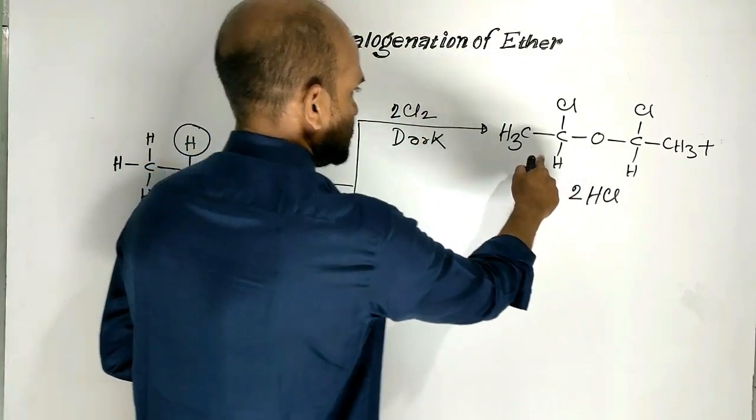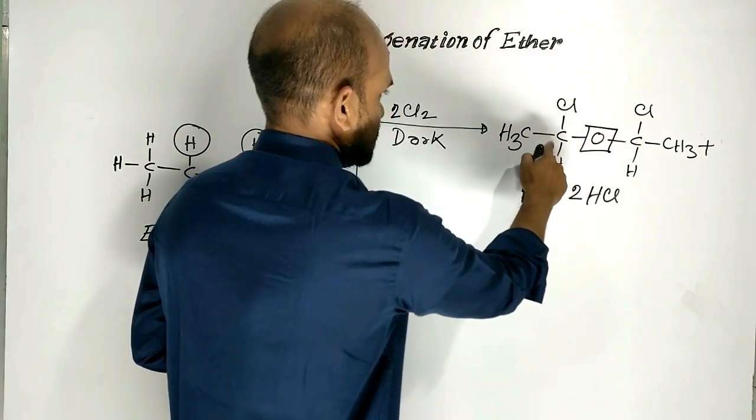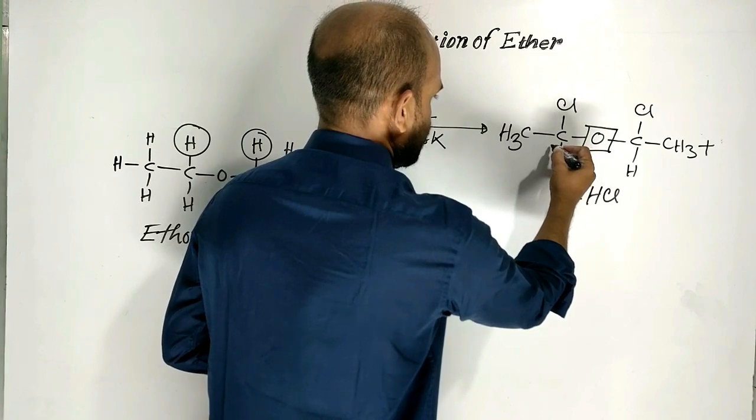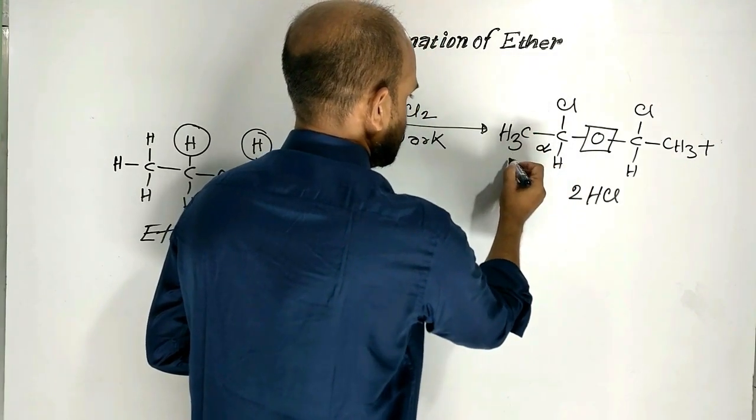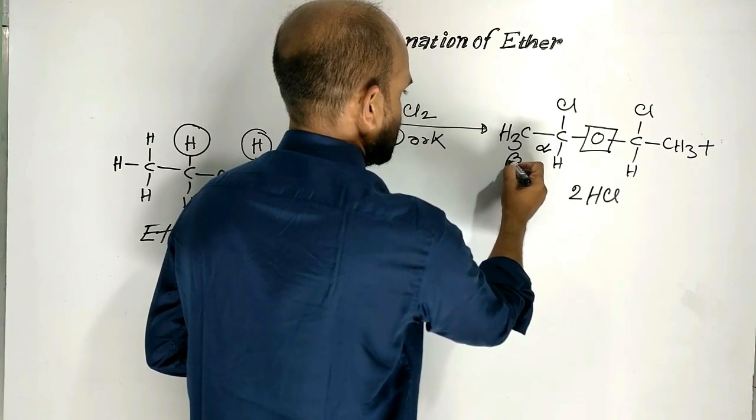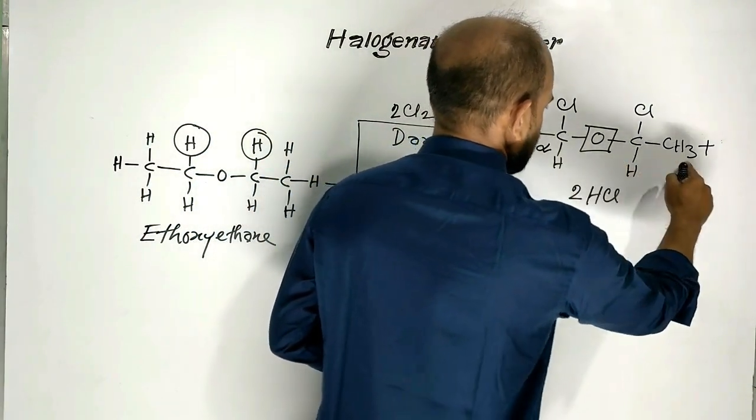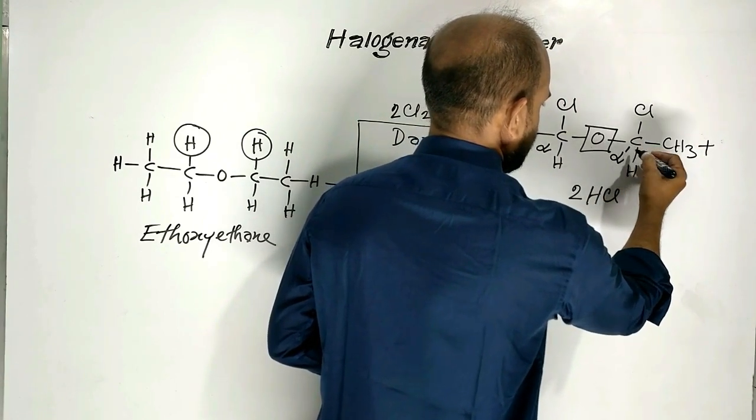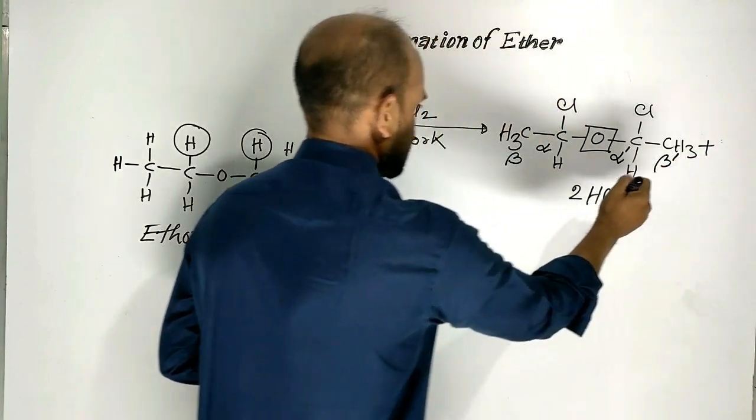Name of this compound is, this is functional group. The carbon linked up with functional group is named alpha. And then this carbon is beta. Towards left and towards right, this carbon will be alpha prime. This carbon will be beta prime.